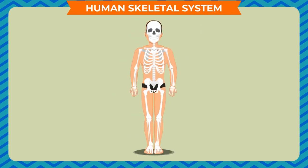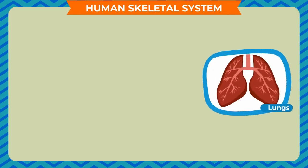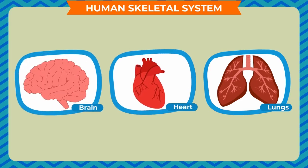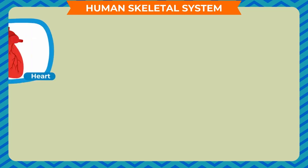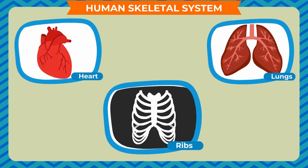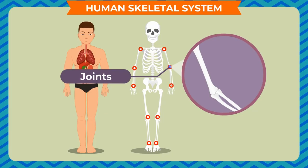Functions of the skeletal system: The skeleton provides support and holds the body upright, and gives proper shape to the body. It protects the soft organs like lungs, heart, and brain. The brain is protected by the skull, and the heart and lungs are protected by the framework of thin, long bones in our chest called ribs. Though individual bones are hard, several of them can move at places where they are joined to other bones.